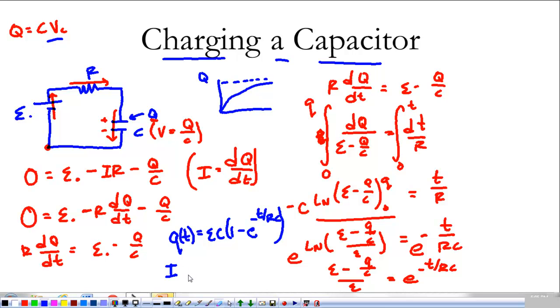I want you to do that on your own. But what we get is this EMF over the resistance times just E to the negative T over RC. And that gives me our expected current starting off at a maximum value and dying. We will have time to spend with this and we will look at a discharging capacitor. But this is our first step.